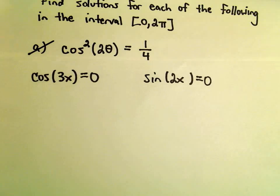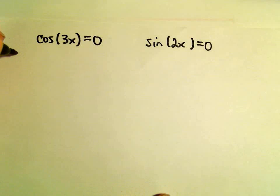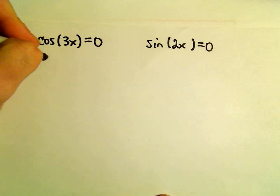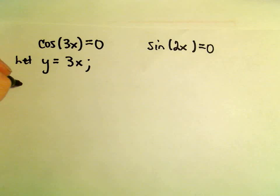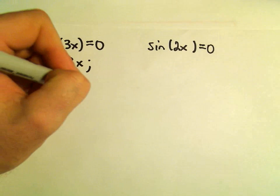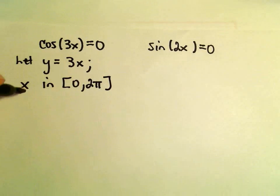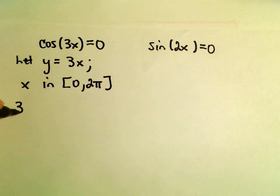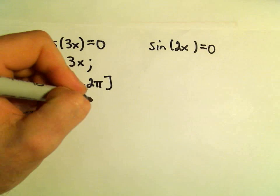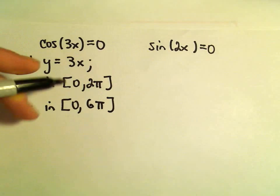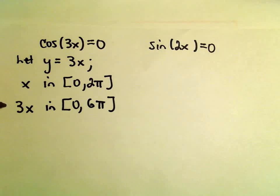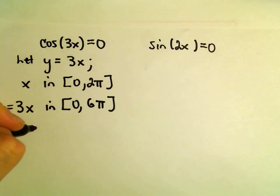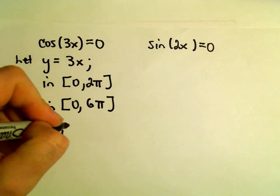I'm going to do the same thing as in the previous example. So I'm going to say, let's let y equal 3x. Okay, so originally we wanted x to be in the interval 0 to 2π. That means 3 times x would have to be in the interval 0 to 6π. Okay, so I'm just multiplying basically everything by 3 here. And that's the same thing as y. So I'm going to say cosine of y equals 0.